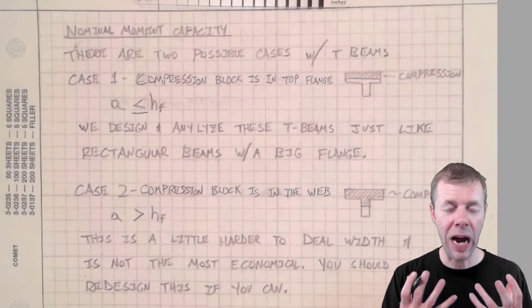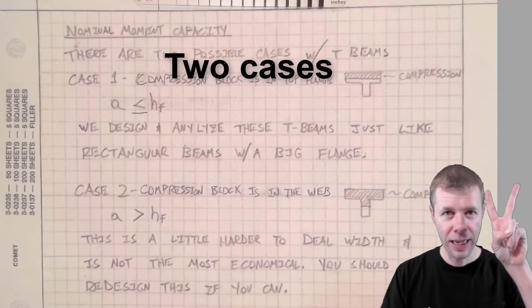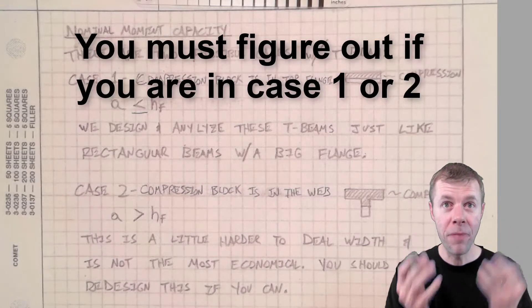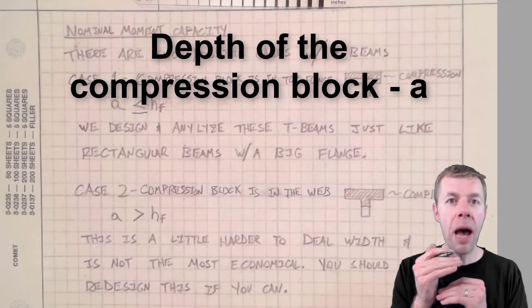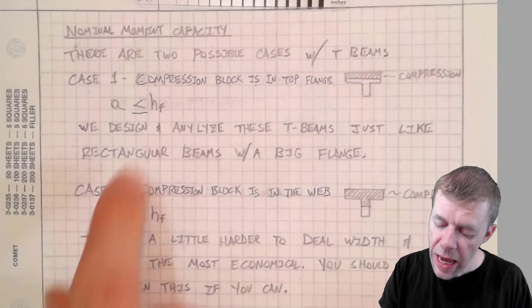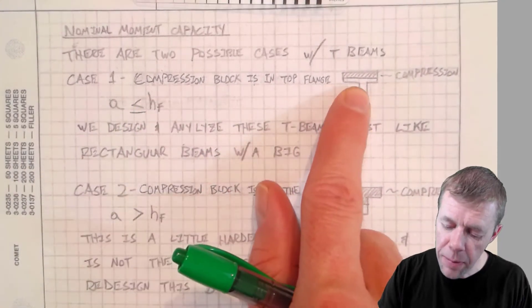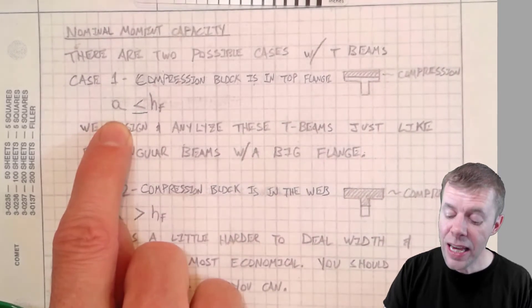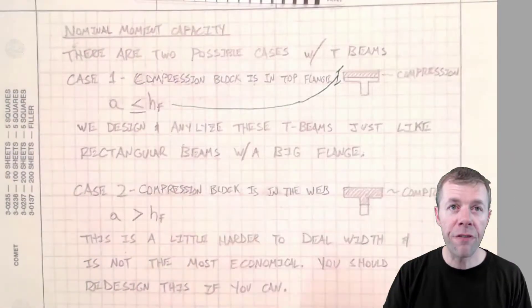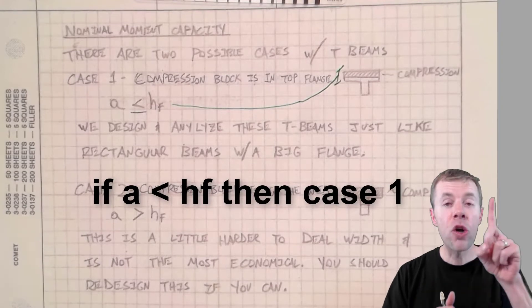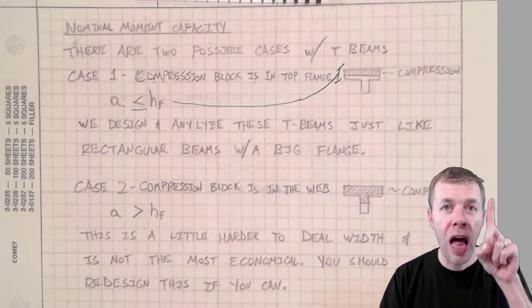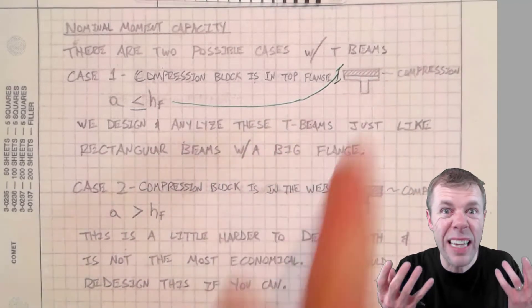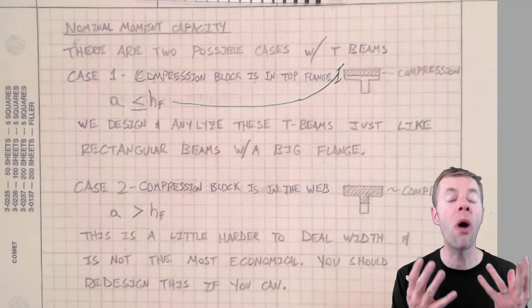In T-beam analysis or design, there are two distinct cases. And the secret to getting every one of these problems right is to figure out which case you're in. And the difference between the two cases is the depth of the compression block. Let me tell you what I mean. If your compression block is in the top flange, that means this little area appears in compression in the top flange. That would be your A, that's the depth of the compression block, is less than HF. HF is the height of the flange. If your A is less than HF, you're in case one. And ladies and gentlemen, this is just like a rectangular beam. It's like a rectangular beam with a huge flange and a very small web. It's easy. You already know how to do it. Super simple.